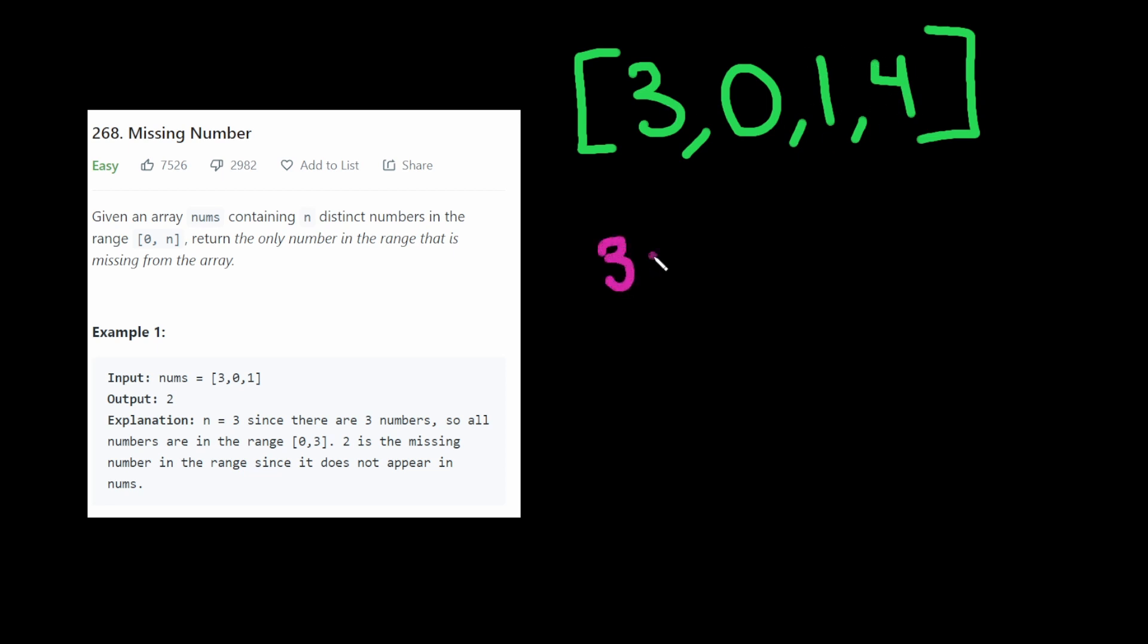So we have to return that 2 because that's what's missing. Now if we just XOR all the numbers by each other, this actually equals 6. So that doesn't work.